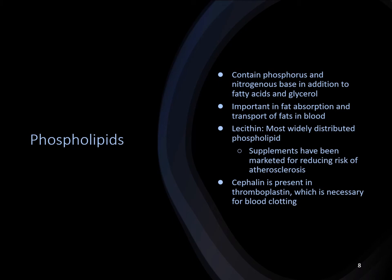Phospholipids contain phosphorus and a nitrogenous base in addition to fatty acids and glycerol. They are important in fat absorption and transport of fats in the blood via lipoproteins. Lecithin is the most widely distributed phospholipid — supplements are being marketed to reduce atherosclerosis risk, though results are uncertain. Cephalin is present in thromboplastin, which is necessary for blood clotting, and sphingomyelin is a constituent of brain tissue and the myelin sheath around nerve fibers.